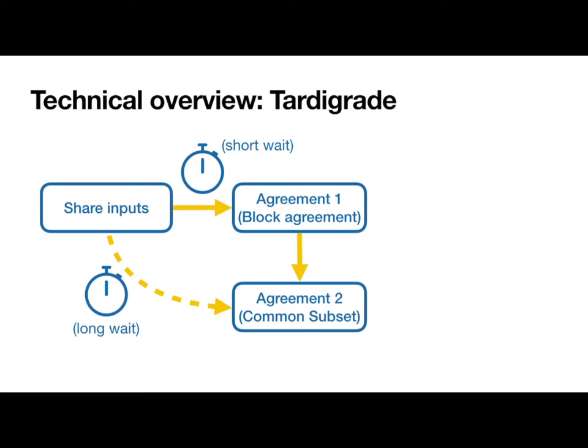The backup plan is simple. If the first timer goes off while I'm still waiting to receive enough inputs, or if the second timer goes off while I'm waiting on an output from the first agreement stage, I'm going to give up on the first agreement stage. I'm just going to wait to gather a pre-block if I haven't already, and then input it directly to the second agreement phase. In either case, whichever path we end up taking, once I output a set of pre-blocks from the second agreement phase, I combine them into a block. And that completes one epoch of the protocol. We keep repeating this process to agree on more and more new blocks.